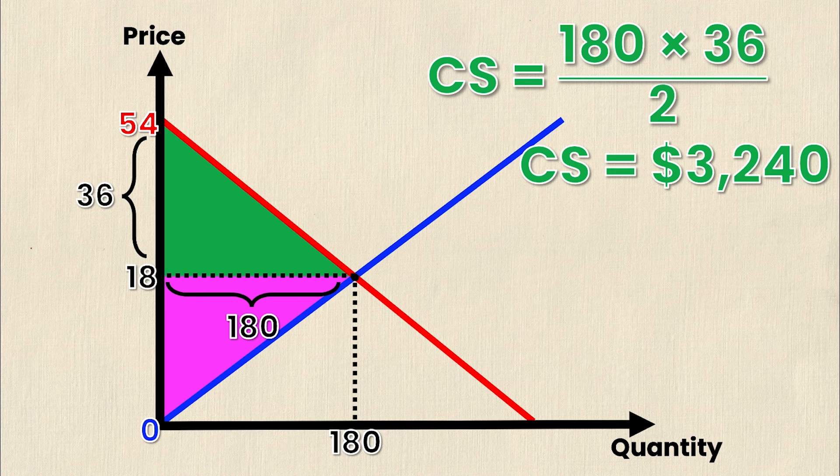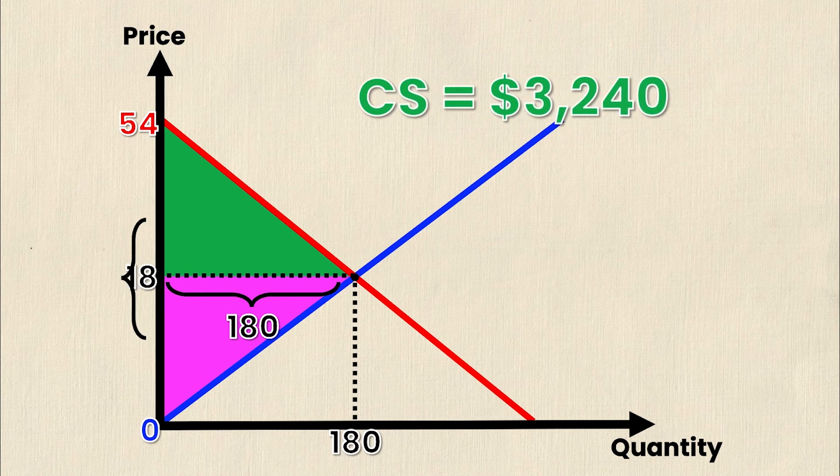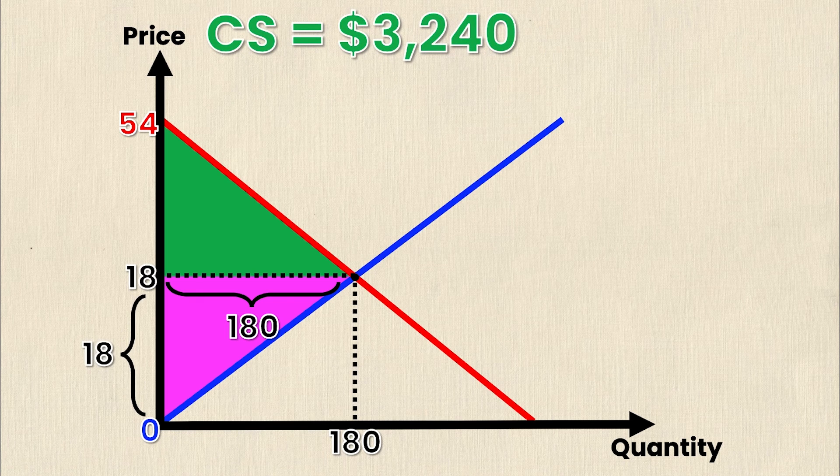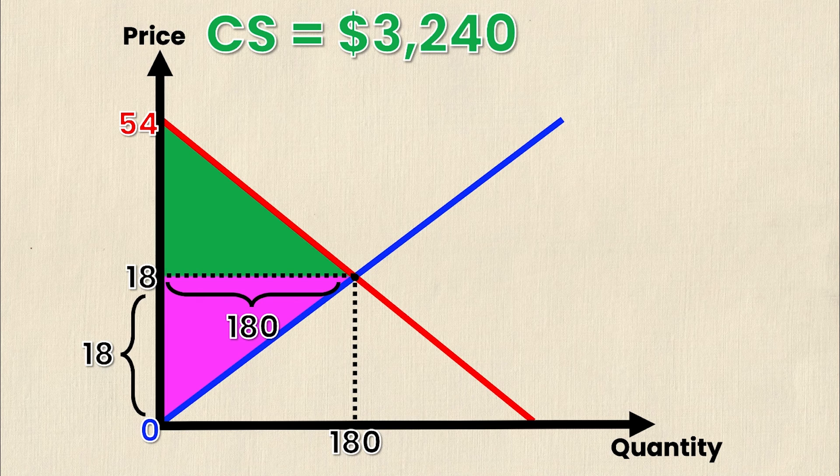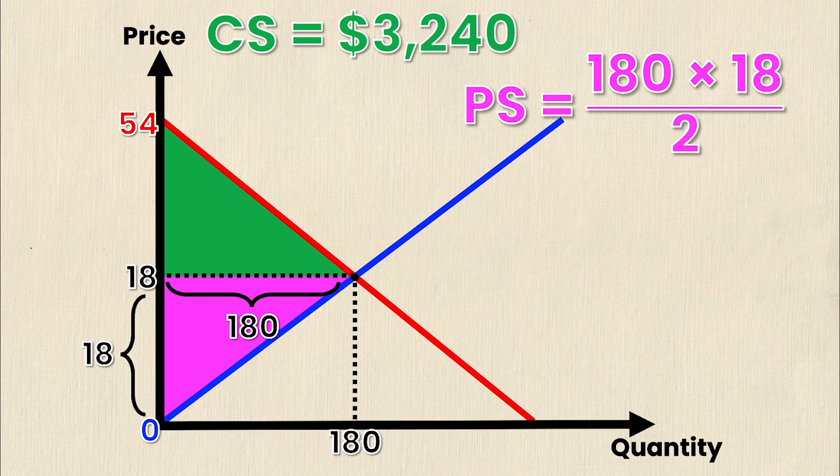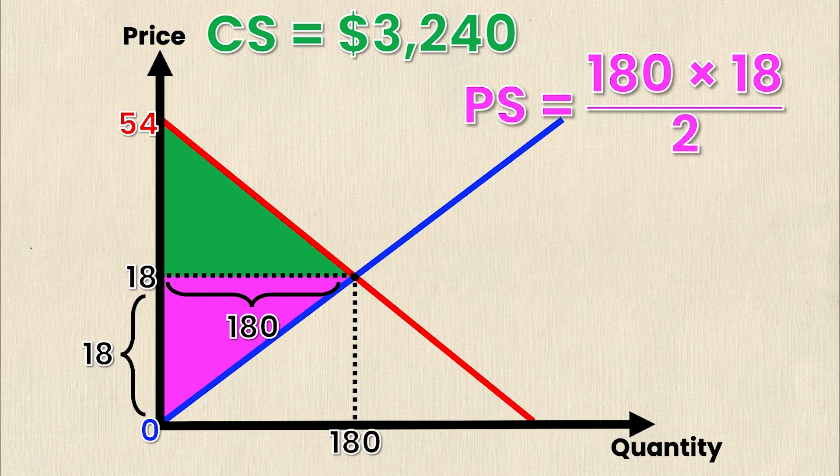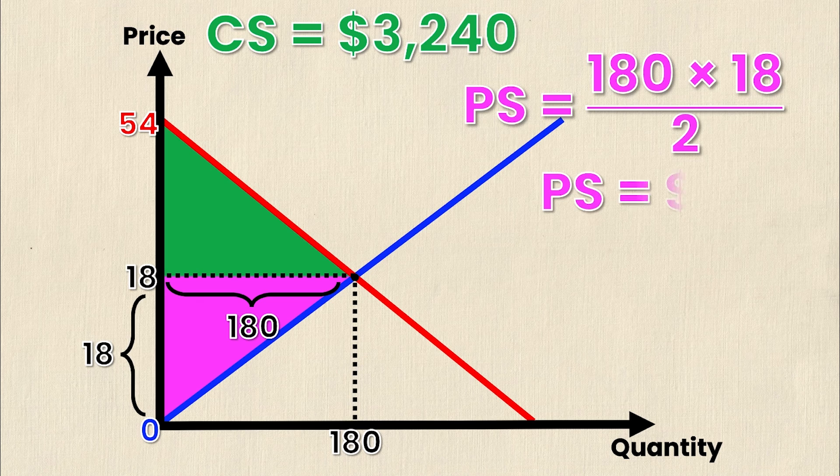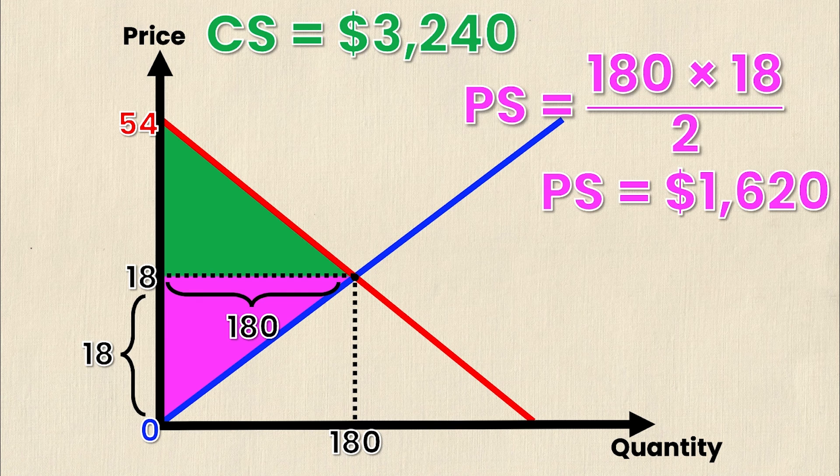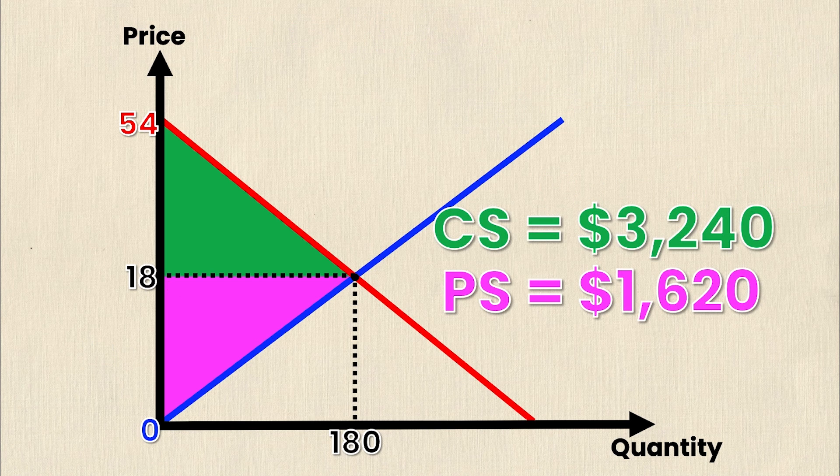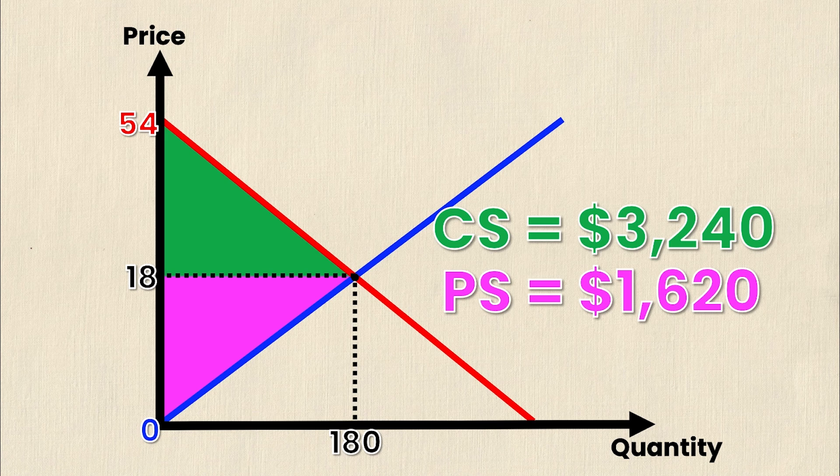Now we're going to do the exact same thing except for the pink triangle and you'll notice that now the base is still 180 but the height is 18 and that's simply the difference between 18 and 0. So if the area of a triangle is base times height divided by 2 then producer surplus must be 180 times 18 divided by 2 and this yields me a result of 1,620. And just like that I've calculated both my consumer surplus and my producer surplus using absolutely nothing but the supply and demand equations.